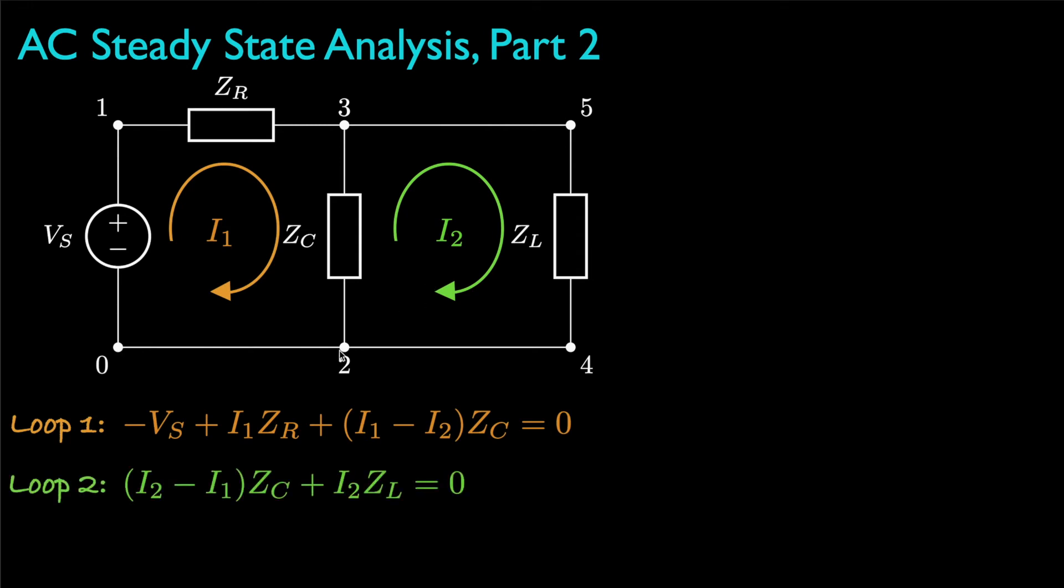For the second loop, starting at node 2, we get I2 minus I1 times Zc plus I2 times Zl, and that gets us back and we set that all equal to 0.